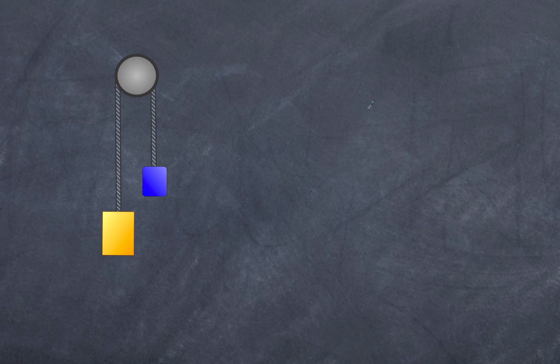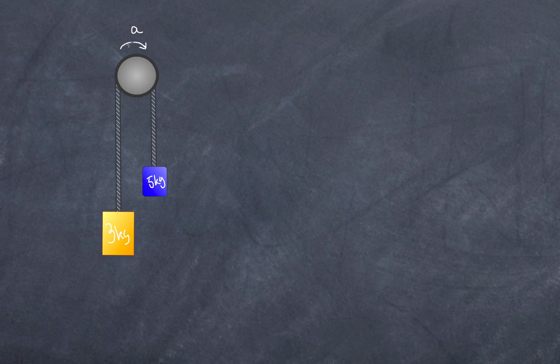We're going to start off really simple with a simple pulley situation where I have two masses hanging over a pulley. I'm going to make this one equal to 3 kg and this one equal to 5 kg. I'm going to predict which way I think it's going to move and establish the positive direction — I'm going to assume the positive direction is the clockwise direction.